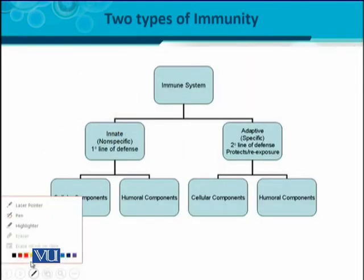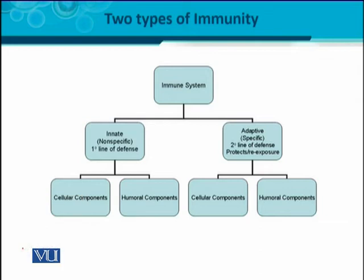We can categorize the immune system in two ways. The innate immune system is a non-specific first line of defense, and it has two components: the cellular component, which is comprised of cells, and the humoral component, which consists of secretory molecules that are products of cells but are not cells themselves. Similarly, the adaptive immune system is the specific second line of defense. It protects the body and has memory, meaning re-exposure triggers a memory response. The innate system does not have this re-exposure memory — it is always present and always ready to protect.